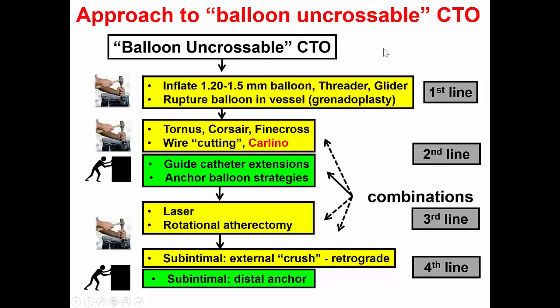The prevalence is about 9%, as seen recently in the PROGRESS CTO registry, and it's important to have an algorithm of how to approach those lesions. The main two strategies are: one, to modify the lesion and the cap,